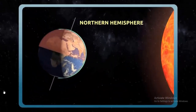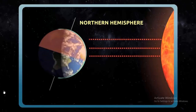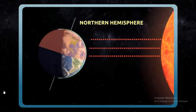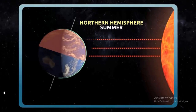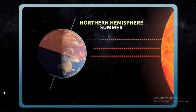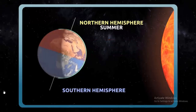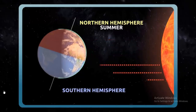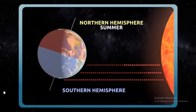The more the hemisphere is inclined toward the sun, the more sunlight reaches the Earth. That's why there is summer in the northern hemisphere and, alternately in contrast, winter in the southern hemisphere.